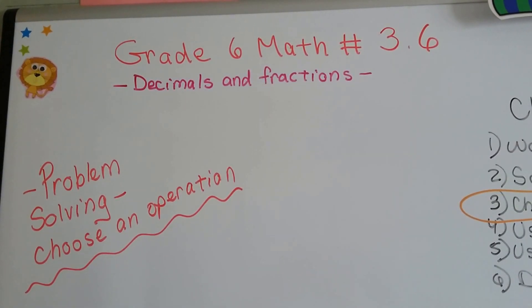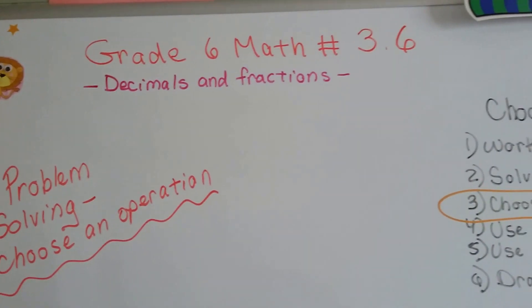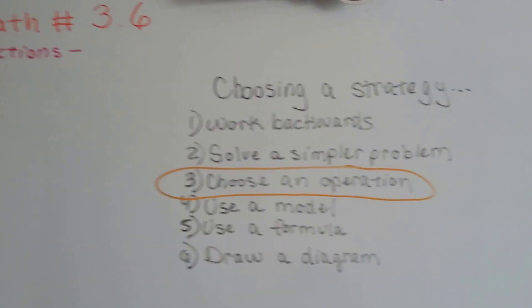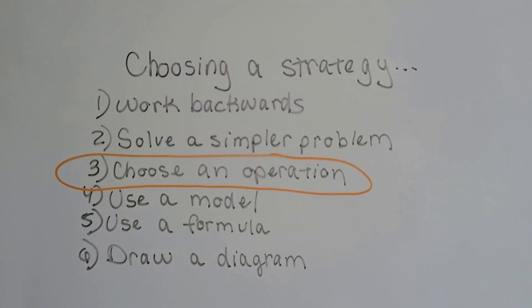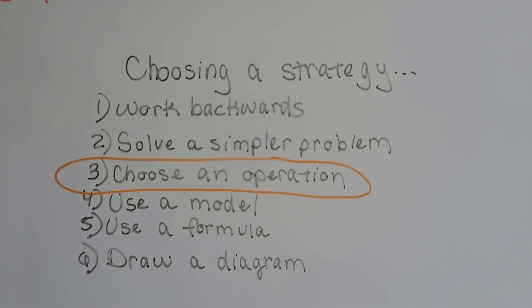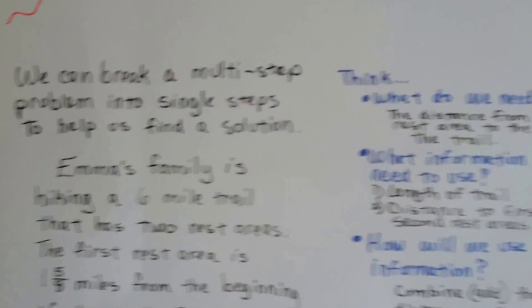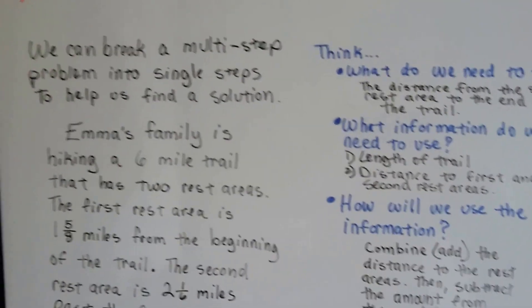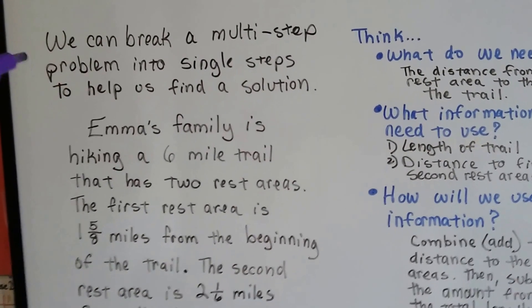Grade 6 math, lesson 3.6: Problem Solving - Choose an Operation. When we do a word problem, we need to choose a strategy. We can work backwards, solve a simpler problem, choose an operation, use a model, use a formula, or draw a diagram. We're going to choose an operation in this one because we've got multiple operations to do — adding and subtracting. We can break a multi-step problem into single steps to help us find a solution.